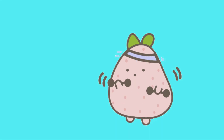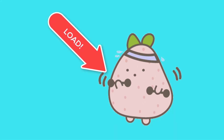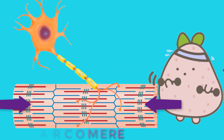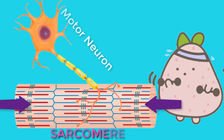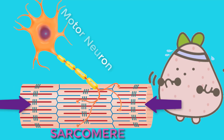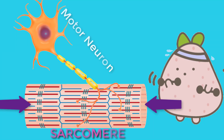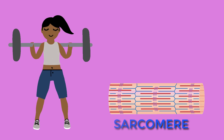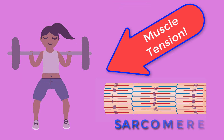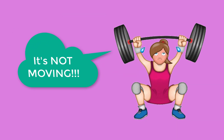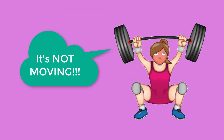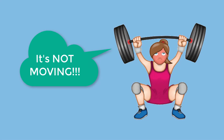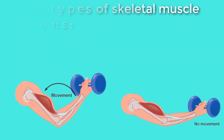To move an object referred to as a load, the sarcomeres in the muscle fibers of the skeletal muscle must shorten. The force generated by the contraction of the muscle, or shortening of the sarcomere, is called muscle tension. However, muscle tension is also generated when the muscle is contracting against a load that does not move.